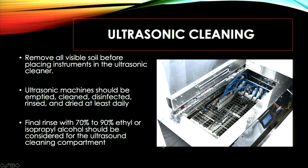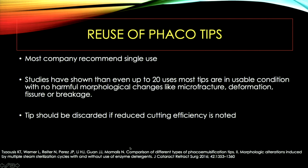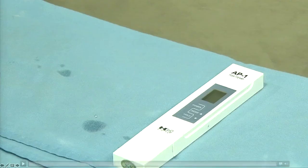Most companies recommend single use of phaco tips, but the American Academy guideline states that phaco tips can be used up to 20 times. Excessive replacement of phaco tips is a concern not only due to cost but because of wastage of aluminum-titanium alloys — discard only if cutting is having a problem. These indicators should be used for the cleaning water: for distilled water, total particulate matter should not exceed 40 ppm, and the pH of water should be acidic with a maximum recommended pH of 6.5. These indicators are easily available from the company.